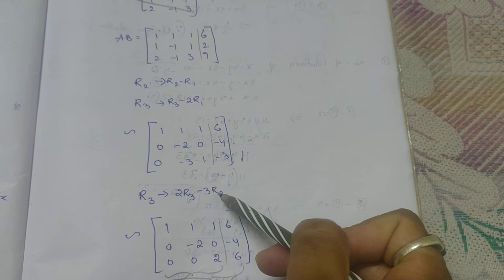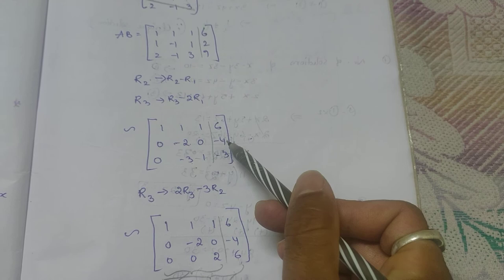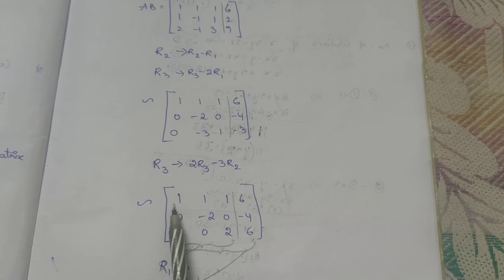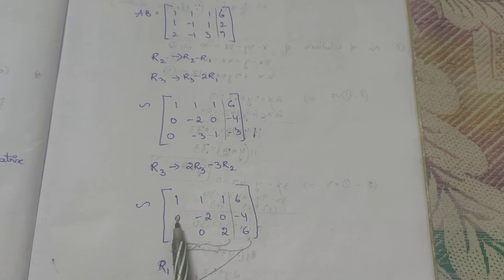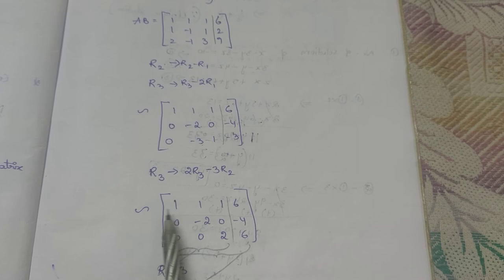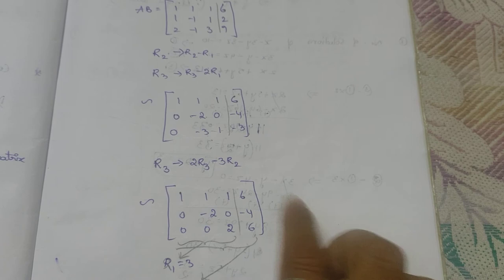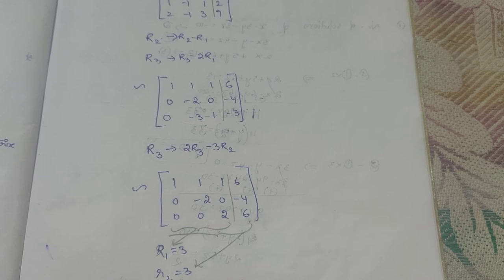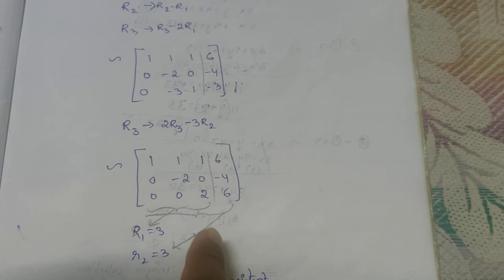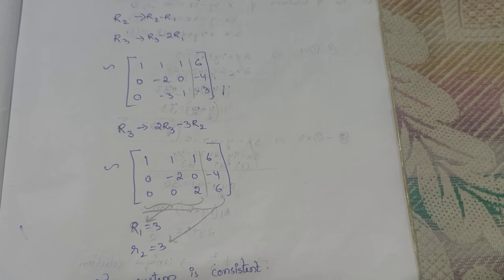The matrix is now in echelon form with 0, 1, and 2 leading zeros in successive rows. Closing the last column: 3 non-zero rows, so rank of A = 3. Opening the last column: still 3 non-zero rows, so rank of [A|B] = 3. Since r1 = r2 = 3, the system is consistent and has a unique solution.